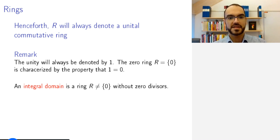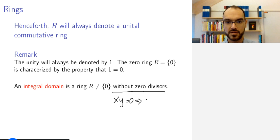Particularly nice rings are integral domains. An integral domain is a non-zero ring that has no zero divisors. This means that whenever a product of two elements is zero, then one or the other element is equal to zero.